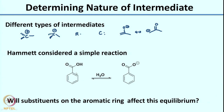To understand this, Hammett considered a very simple reaction. If you look at the reaction here, it is actually quite simple. This molecule is benzoic acid. Benzoic acid, if you take it in water, can dissociate to give you the benzoate anion and H3O+ (not shown here). So benzoic acid when it dissociates in water gives the benzoate anion and H+. Let us say the equilibrium constant for this is given by K.